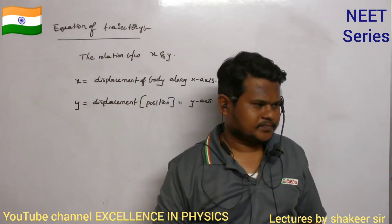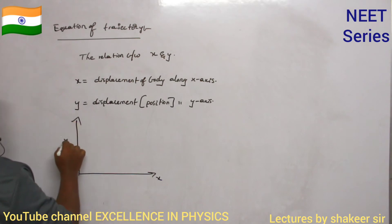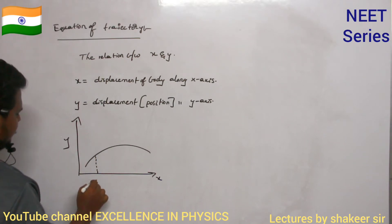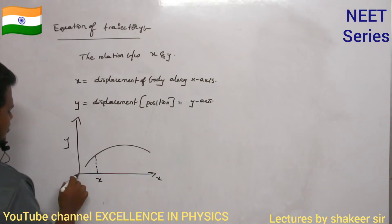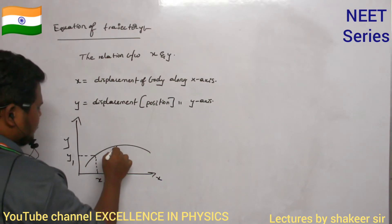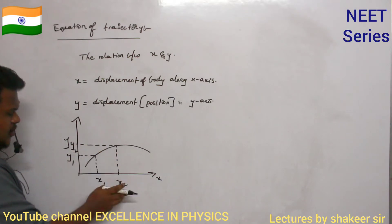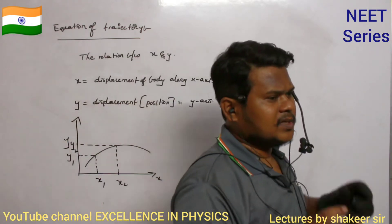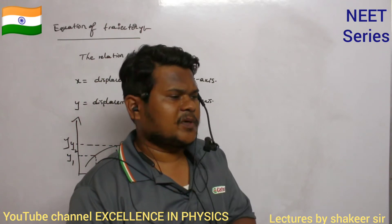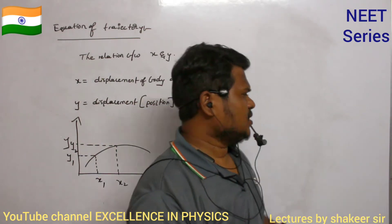Consider a body moving along a path. At a particular time t, along the x-axis it is at position x1 and along the y-axis it is at position y1. After some time it is at x2 along x and y2 along y. The equation describing how x and y change is called the equation of trajectory. Importantly, in this equation time t will not be present — only a relation between x and y.